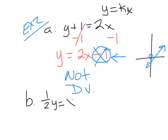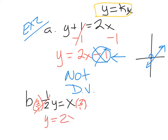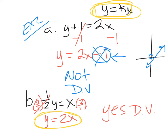For part B, we have one-half y equals x. The y is not by itself, so we've got to get y by itself. Since it's a fraction, when you divide a fraction you flip it and multiply — so times two over one. That cancels the one-half, leaving y equals two x. Is this direct variation? Yes, because there's no y-intercept other than zero. It's written in direct variation form: y equals kx, with k being two. So k equals two.